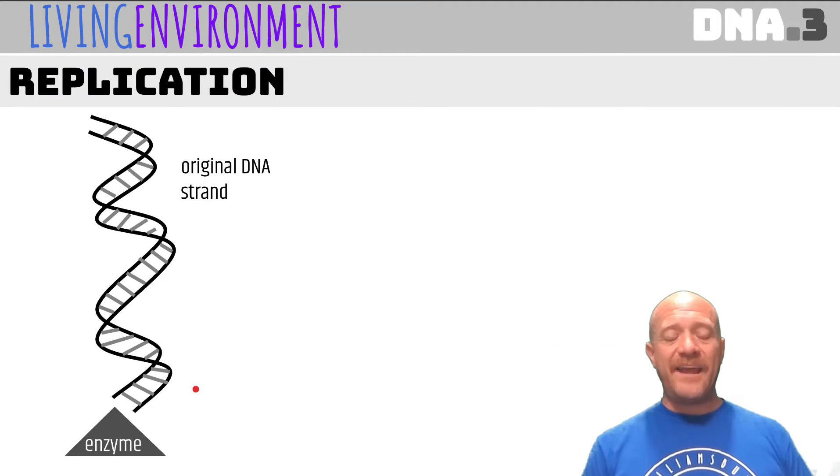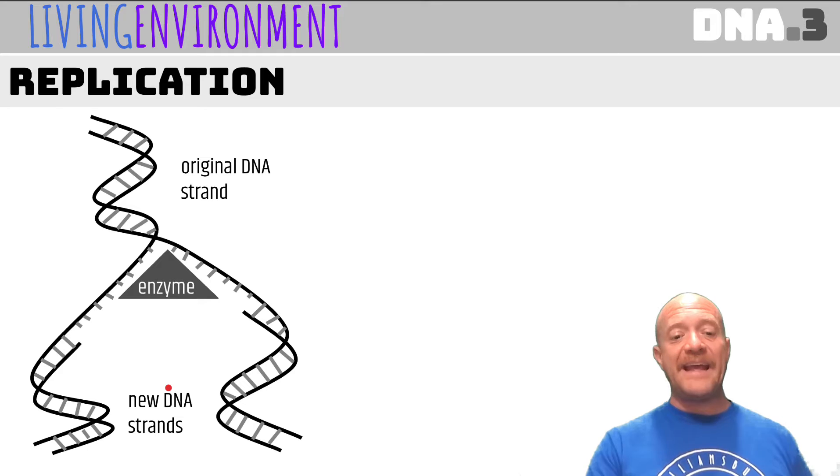So, DNA, it looks like this. I mean, this is a simplified version or view to it, but it has a double helix and it kind of looks like a twisted staircase. And whenever it is copied, that's known as replication. And we have our original DNA strand.